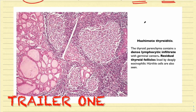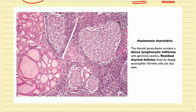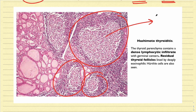Let us now see the microscopic features of Hashimoto's thyroiditis. If you see over here, these are actually the follicles that we can appreciate. These are the lymphoid follicles that we see in this case.